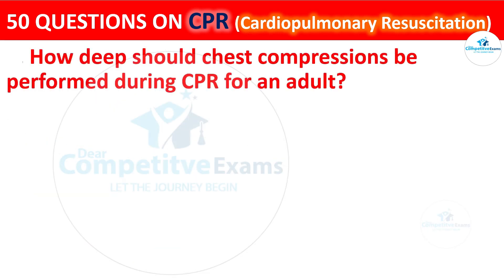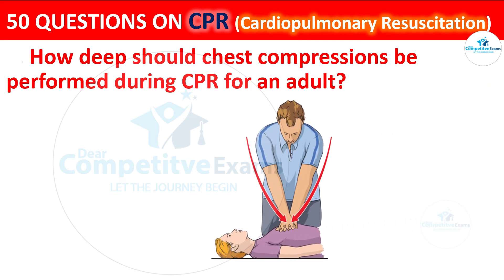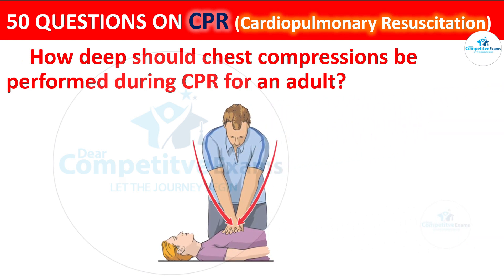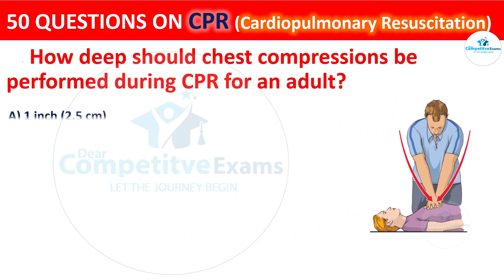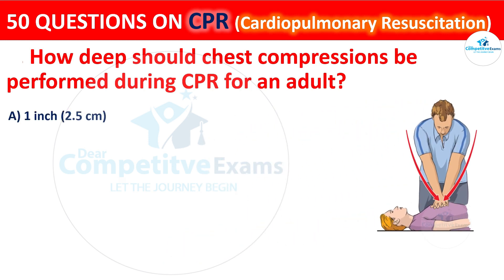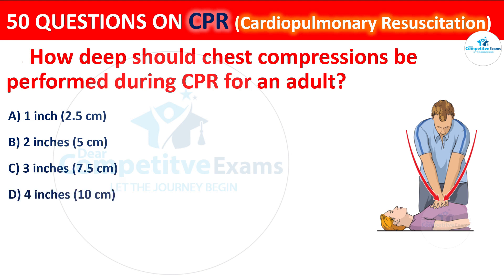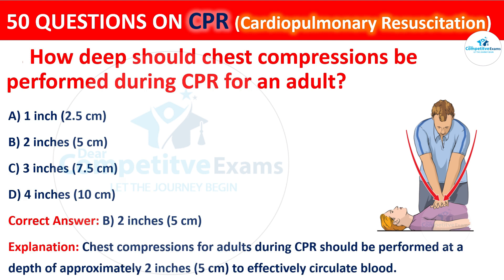Question 42: How deep should chest compressions be performed during CPR for an adult? The options are: 1 inch (2.5 cm), 2 inches (5 cm), 3 inches (7.5 cm), or 4 inches (10 cm). The correct answer is B — 2 inches (5 cm). Chest compressions for adults during CPR should be performed at a depth of approximately 2 inches (5 cm) to effectively circulate the blood.